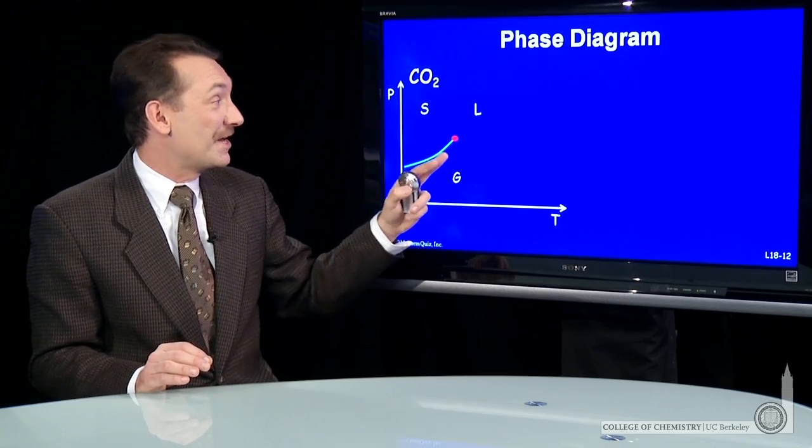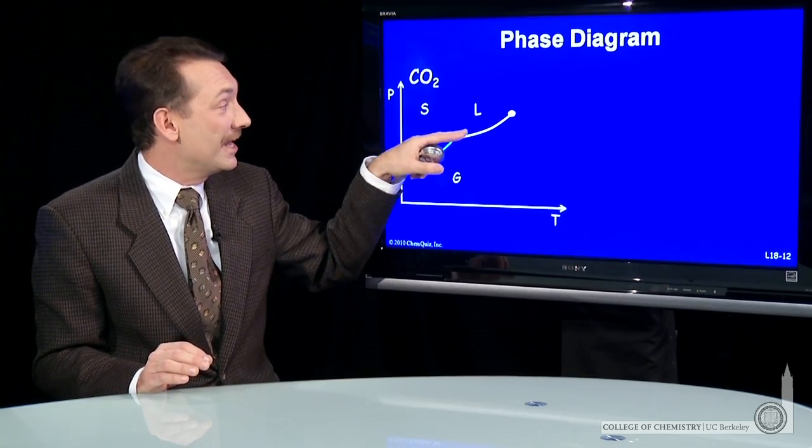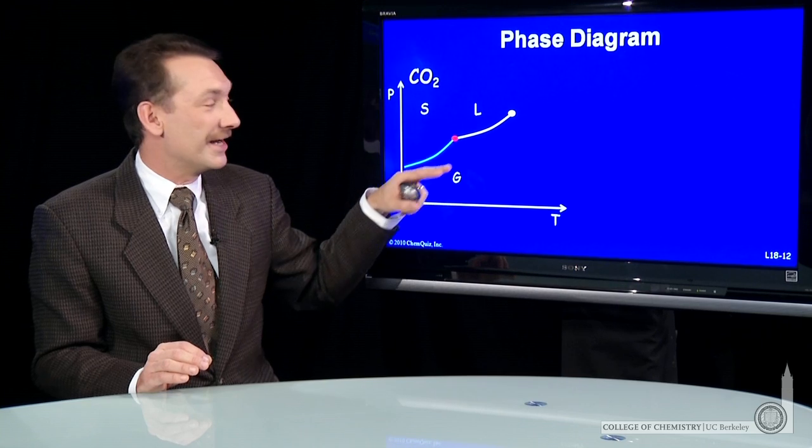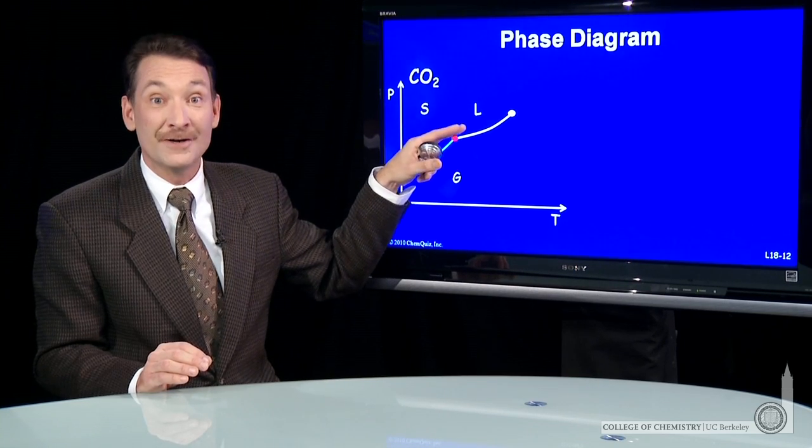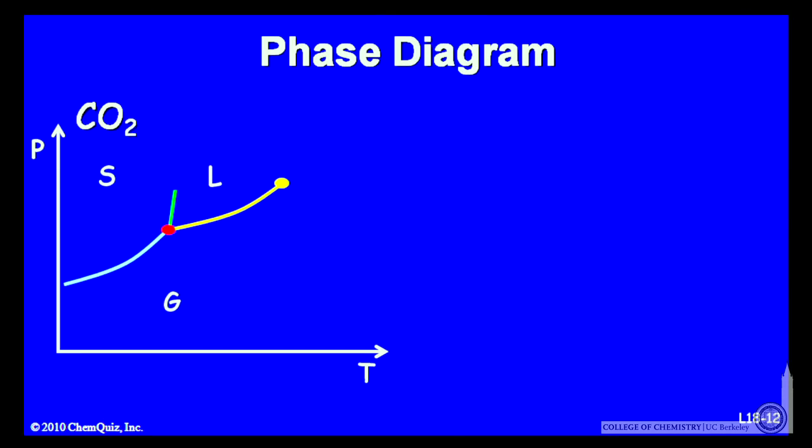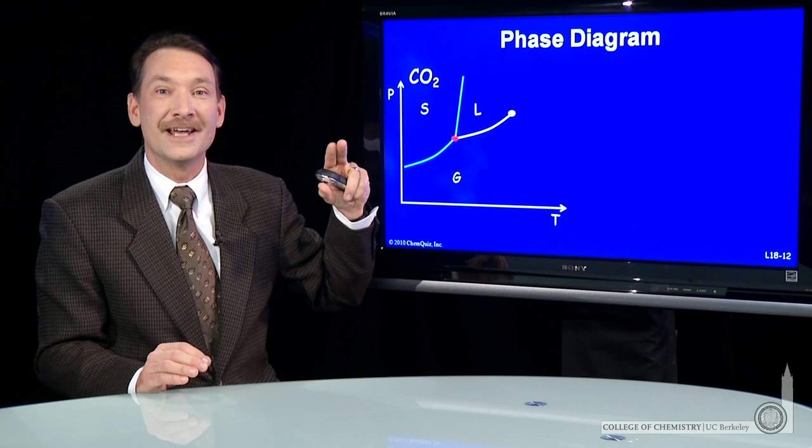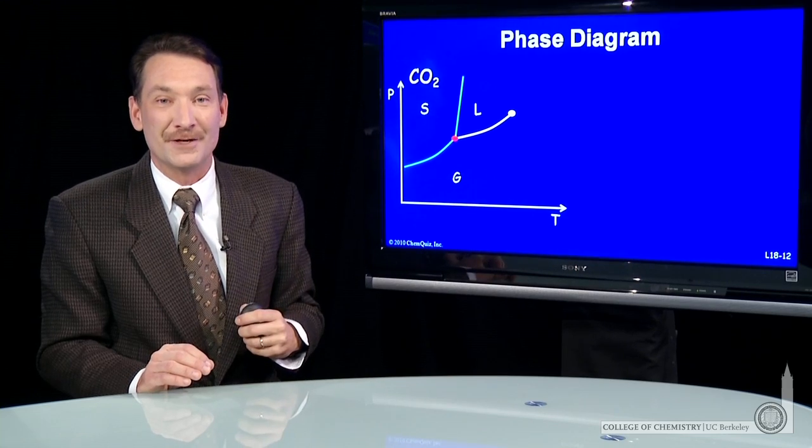This is a plot for carbon dioxide. And here's the liquid gas equilibrium line. That corresponds to boiling or condensation. And you can also plot the solid liquid melting or freezing equilibrium line. Every point on this line, the solid and the liquid are in equilibrium.